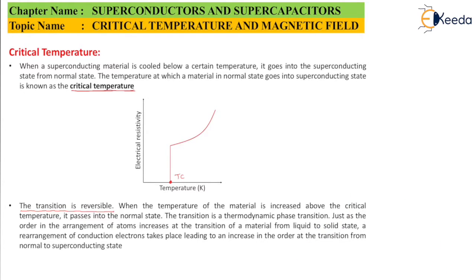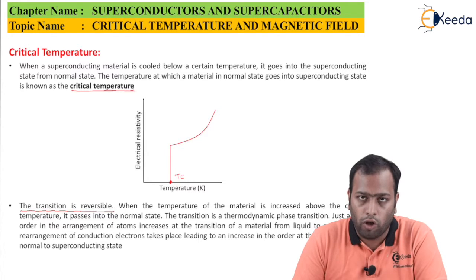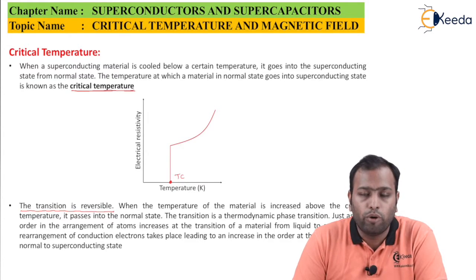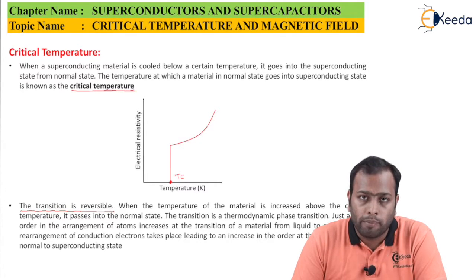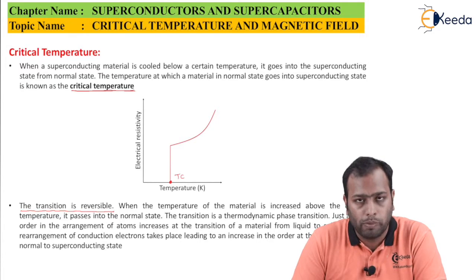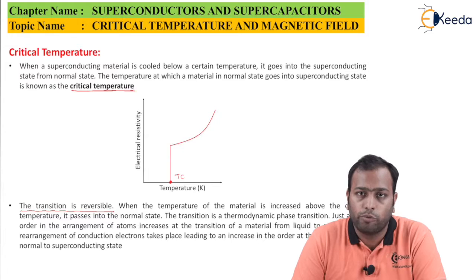So basically, in a nutshell, beyond TC, your material is going to act like a normal conductor and below TC, your material is going to act like a superconductor. So if you want your material to behave like a superconductor, you have to make sure that the temperature limit has to be below TC.